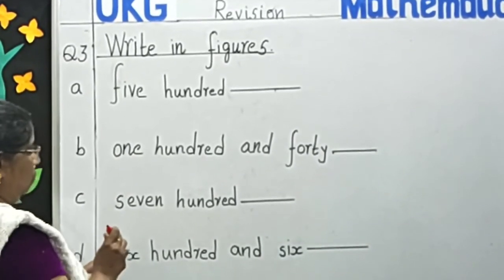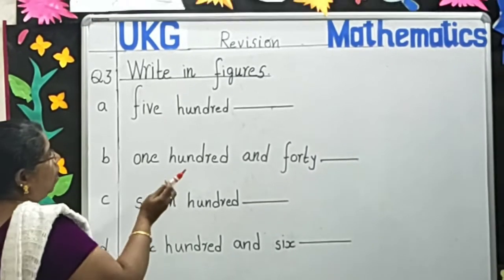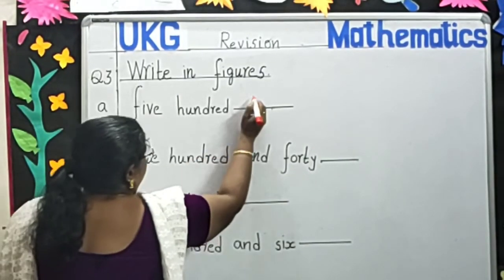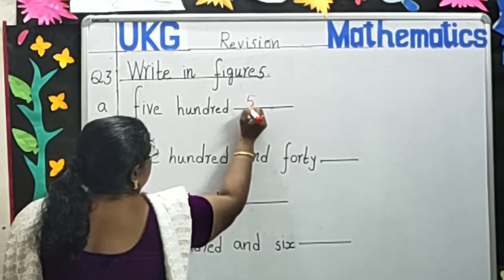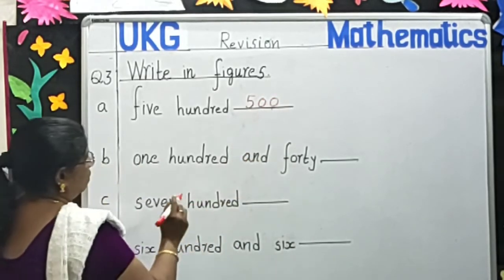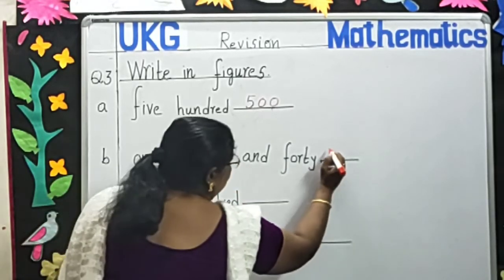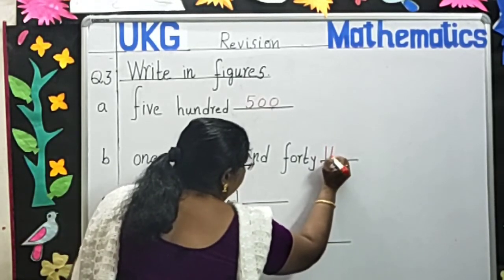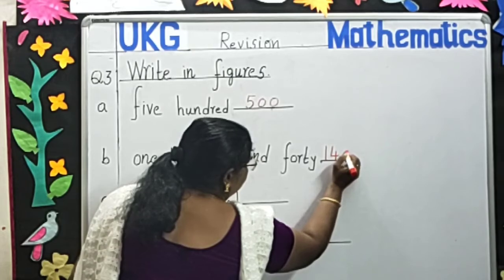First one: five hundred. How will we write 500? 5, 0, 0. Next, one hundred and forty: 1, 4, 0.